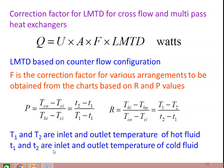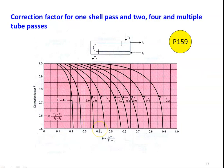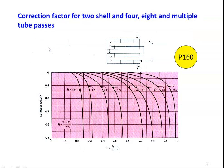Based on the P and R values, we find the correction factor F from charts for various arrangements. Page 159 of the Heat and Mass Transfer data book gives the chart for one shell pass with two, four, or multiple tube passes — P on the x-axis, correction factor on the y-axis, with different lines for R values. Page 160 covers two shell passes with four, eight, or multiple tube passes, with the same P-axis and R-value lines.